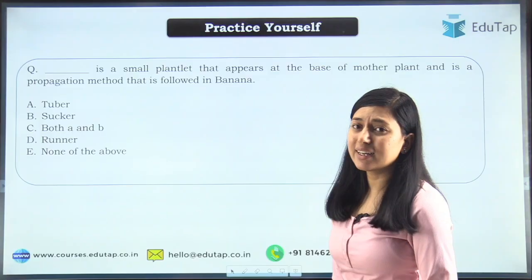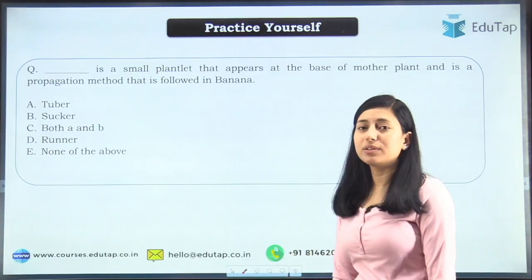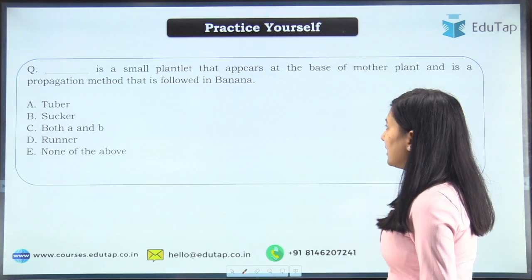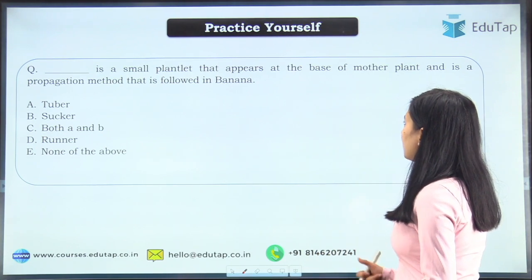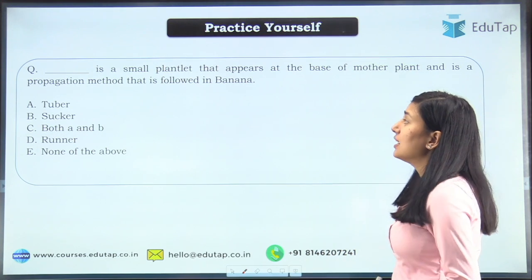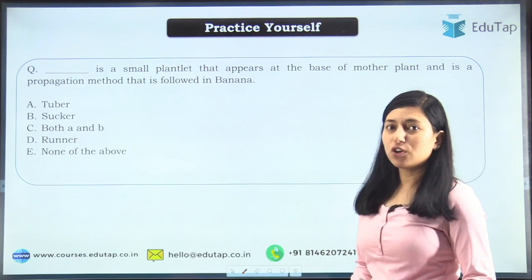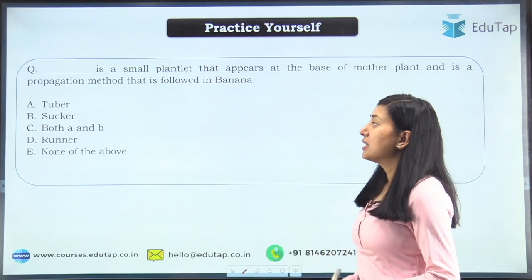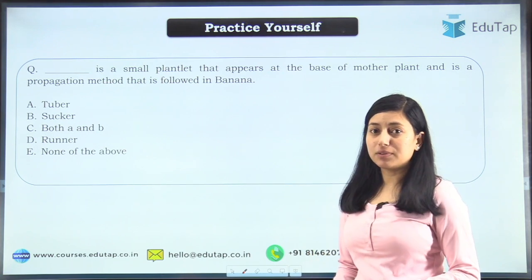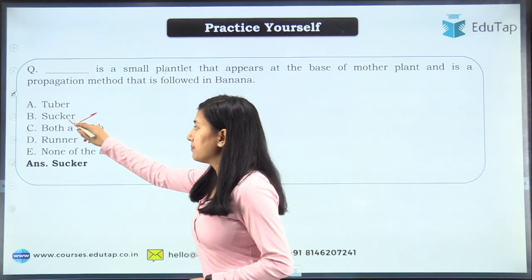Now let's start with the question I had given you in the previous video: 'Dash is a small plantlet that appears at the base of a mother plant and is a propagation method followed in banana.' The options were tubers, suckers, both A and D, runner, and none of the above. The right answer is suckers.